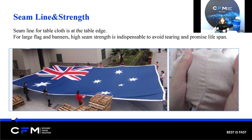Also, for large flags and banners, high seam strength is indispensable to avoid tearing. CFM has rich experience with large flags and banners like 15 by 25 feet and 20 by 30 feet. This size normally requires at least three pieces sewn together, as shown in the photos here. Reinforced edge and strong seam line are the vital points for product lifespan. For every fabric product you are manufacturing, this will help you have an idea of your desired stitching properties and seam strength so as to make your products meet customers' expectations.